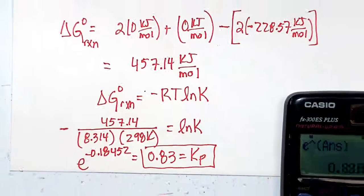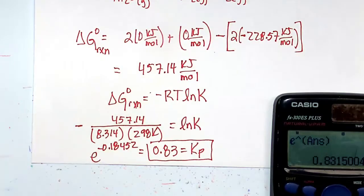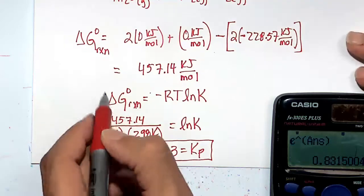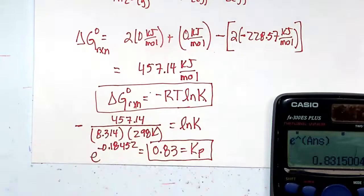This equation we can use because we're at standard state. If we're not at standard state, we have to use what's called the Nernst equation to take into consideration that we're not under the conditions of temperature or concentration or pressure. But since this is at standard state, we can go ahead and utilize K and utilize the values in the back of the book, which are at standard state conditions.